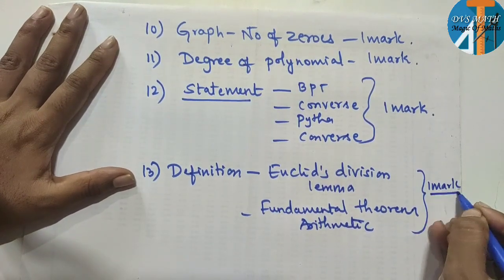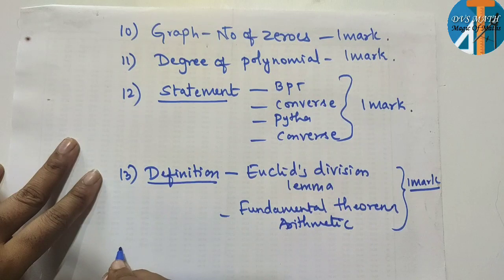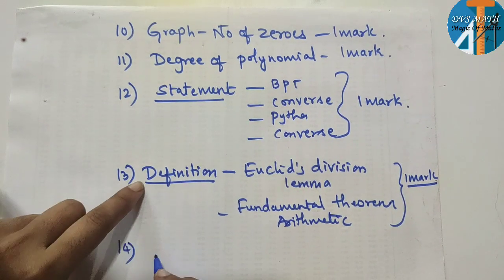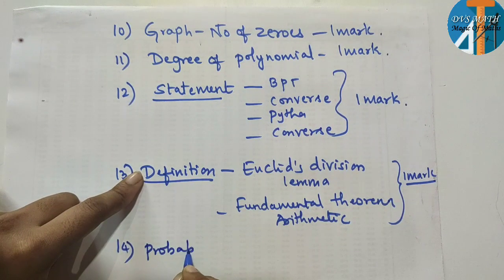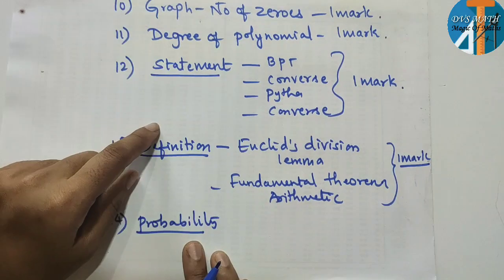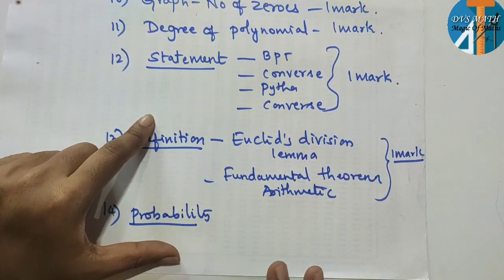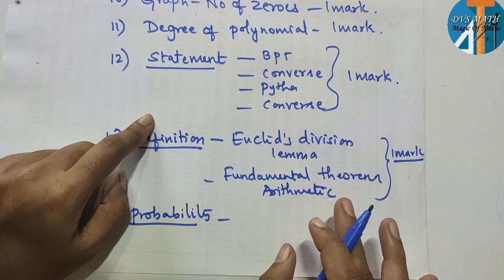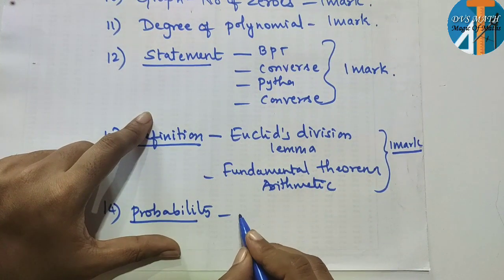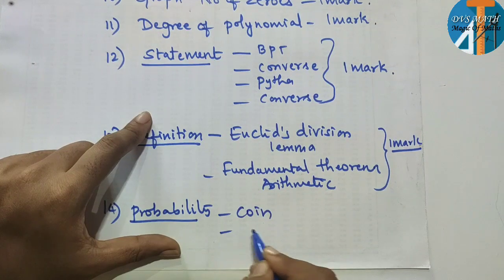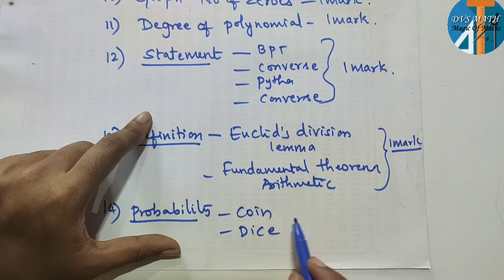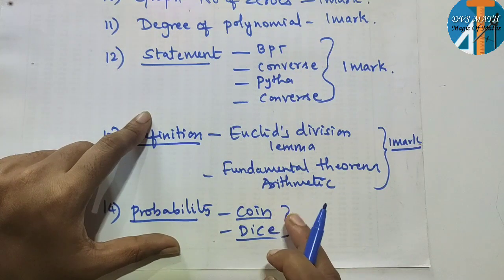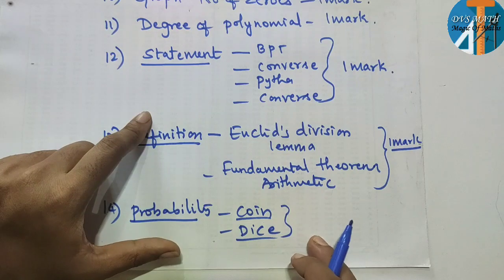Next, probability — go through all exercise questions for probability. Last time it was very simple, three marks. This time also probability lesson will have easy questions. Practice coin and dice problems — coin and dice problems are easy to solve. If you need simple help on this, comment.